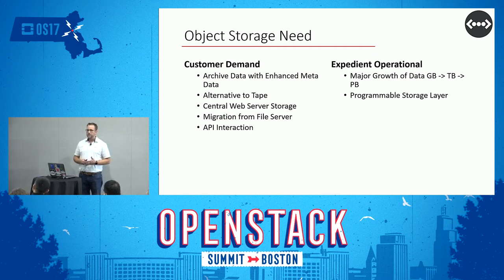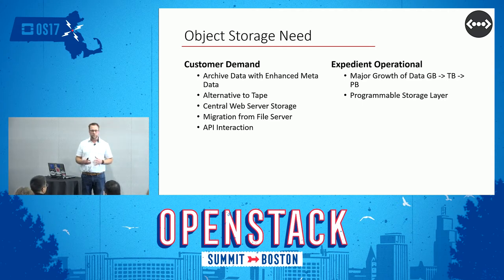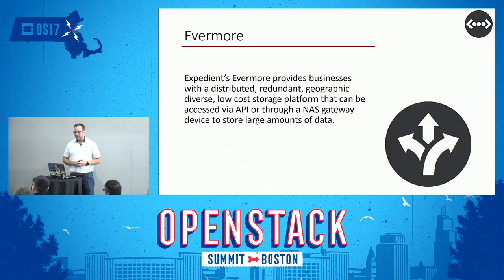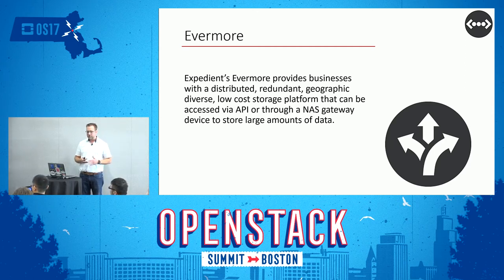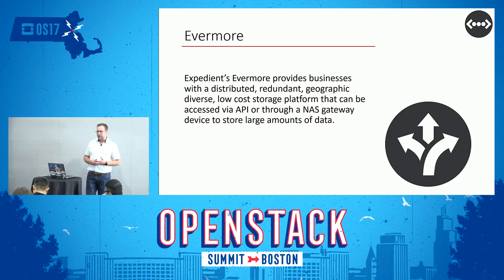On the Expedient side, we saw this as an opportunity to roll out something with a programmable storage layer. As we were going from gigabytes to terabytes to petabytes, we wanted to make sure this was something that scaled without scaling people one-to-one — a few people could run a big platform. What we created is what we call Evermore: object storage focused on being distributed, redundant, and geographically diverse, at very low cost, primarily for archive data — accessible via API or NAS gateway.